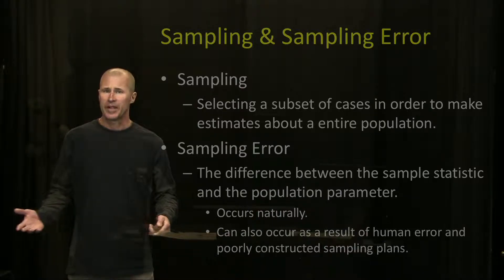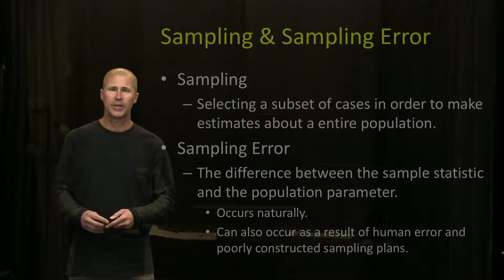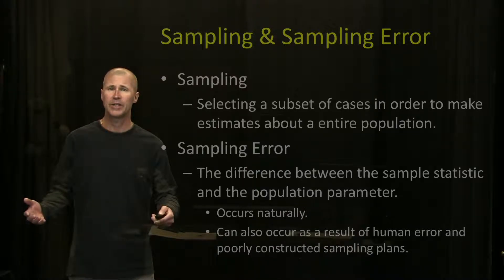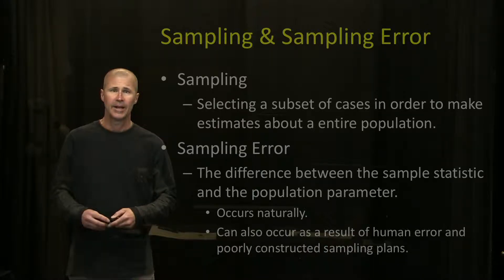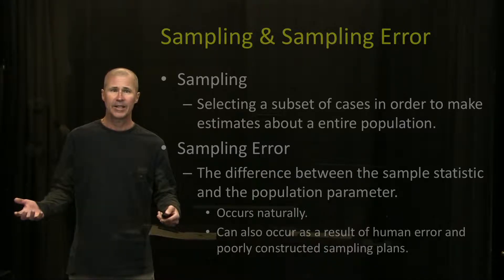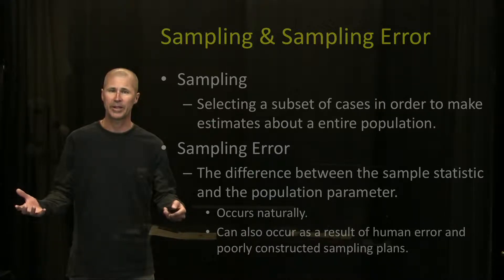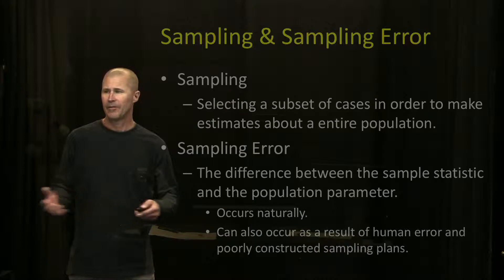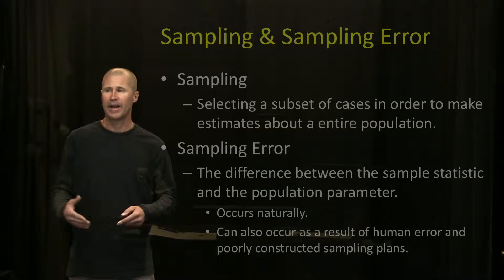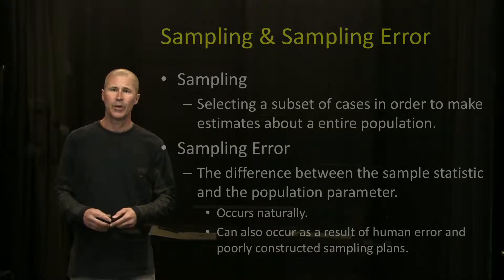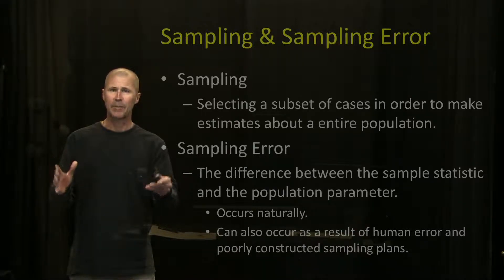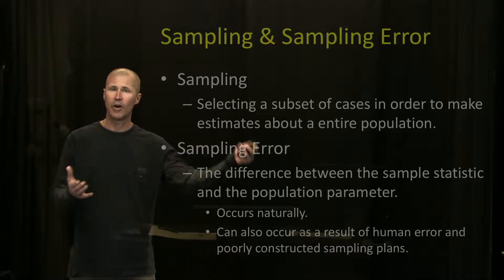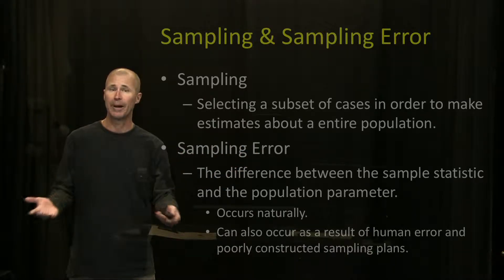Most of you are familiar with sampling. As researchers, we sample all the time in social science research, health science research, and political science research. Sampling is simply selecting a subset of cases in order to make estimates about an entire population. It's often impossible to survey an entire population, so it's easier and more appropriate to take a sample, study that sample, and then make estimates about the overall population based on what you learn.